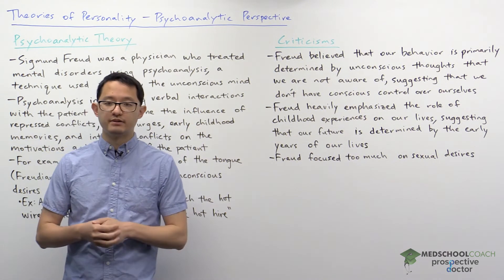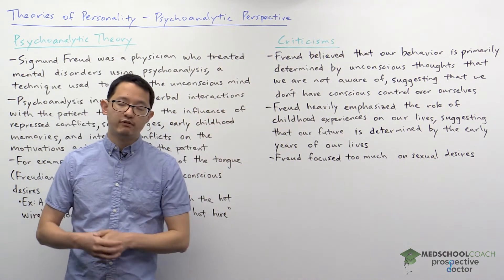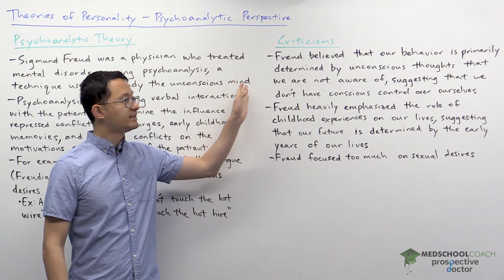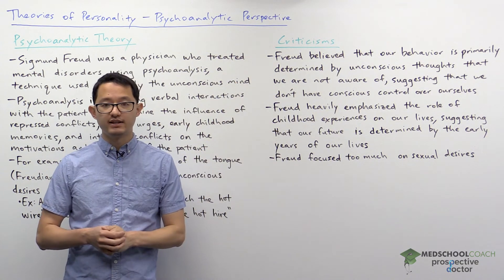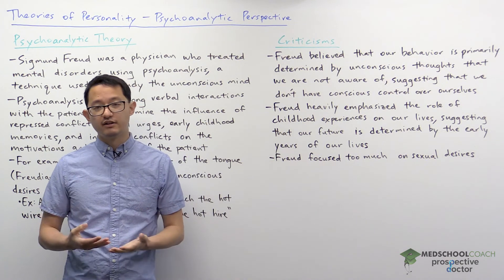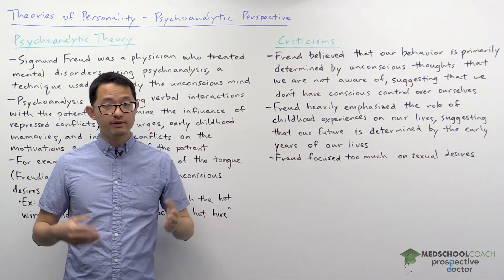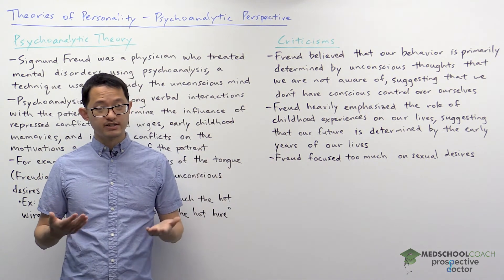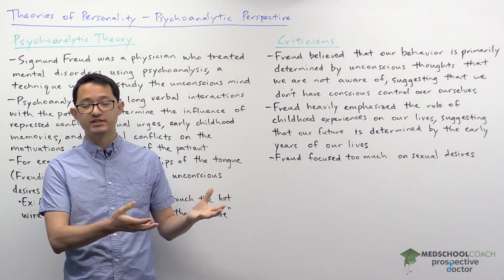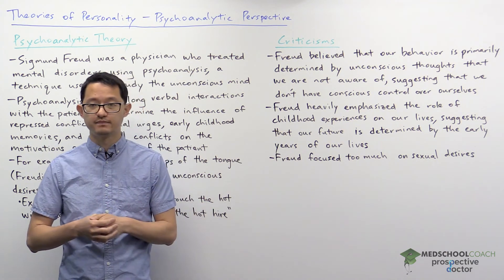The first criticism of this theory is that Freud believed our behavior is primarily determined by unconscious thoughts that we're not aware of. Many psychologists had an issue with this because it suggests that we don't have conscious control over ourselves — that it's unconscious thoughts we don't even know about that are controlling our lives.